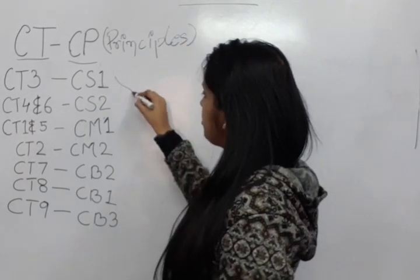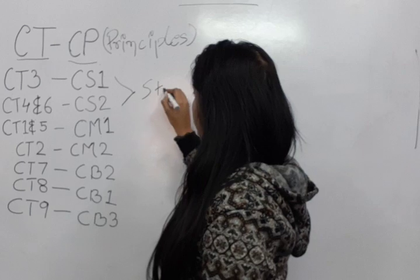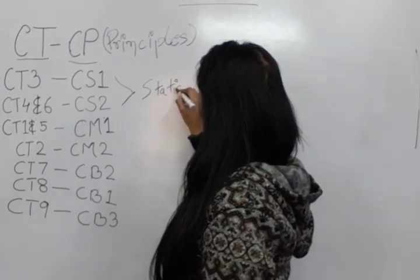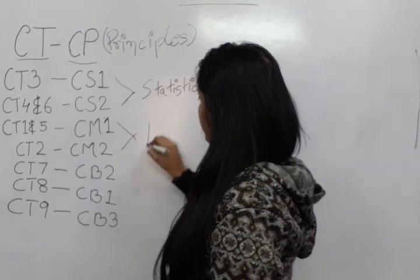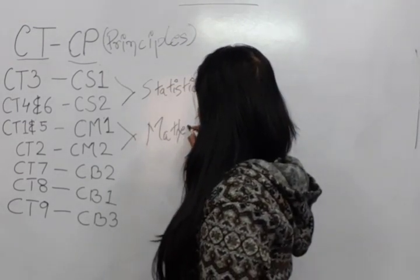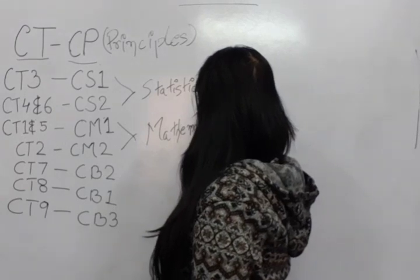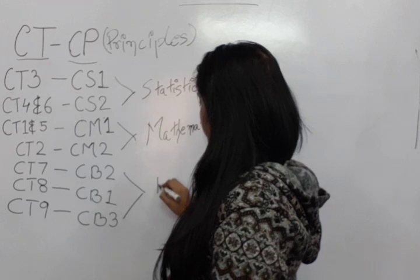What are the 3 parts? The 3 parts are: first portion is Statistics, second is Mathematics, and the third portion is Business.